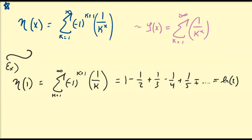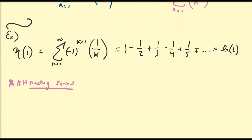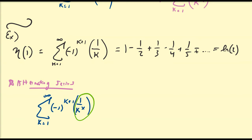So clearly the eta function is defined for values at x equals 1. Let's consider the alternating series test to determine the values of x for which this function is convergent. The alternating series test says the sum from k equals 1 to infinity of negative 1 to the k plus 1 times 1 divided by k to the x is convergent if the term is positive and always decreasing, which holds when x is greater than 0. Since k is a positive number, that's easy to verify.